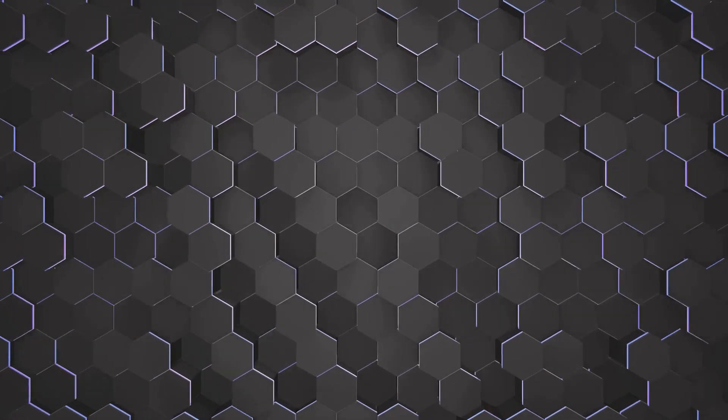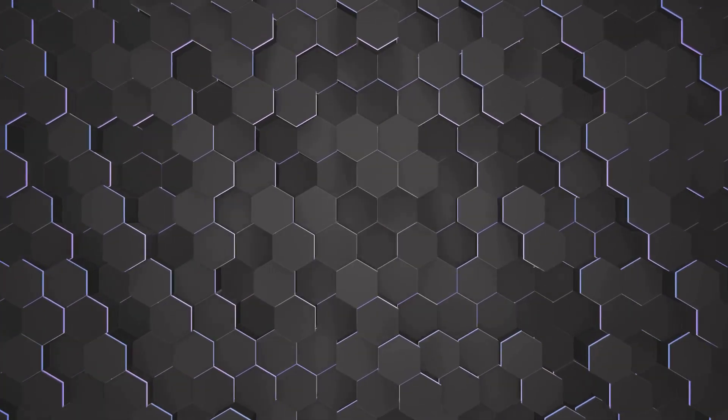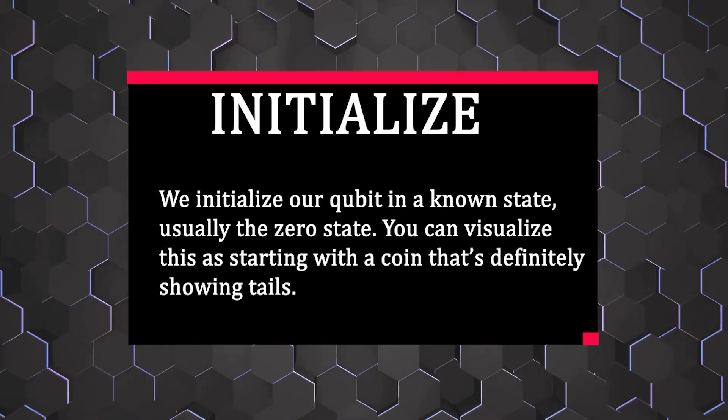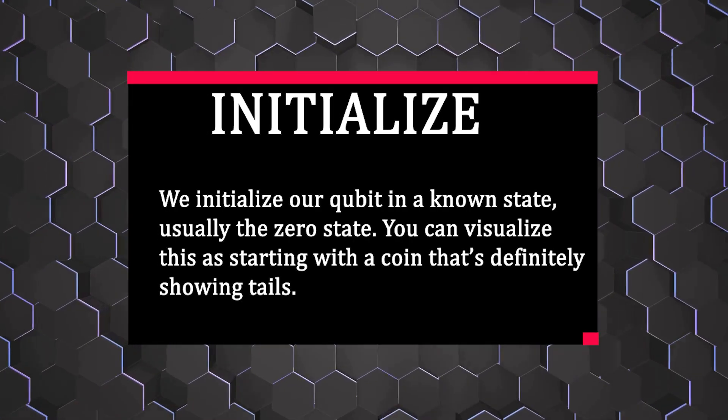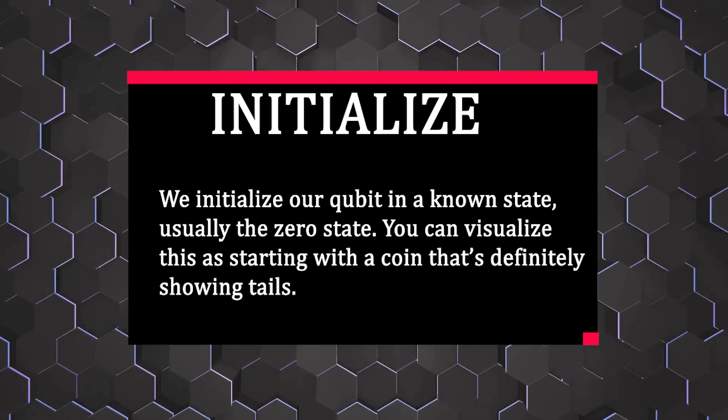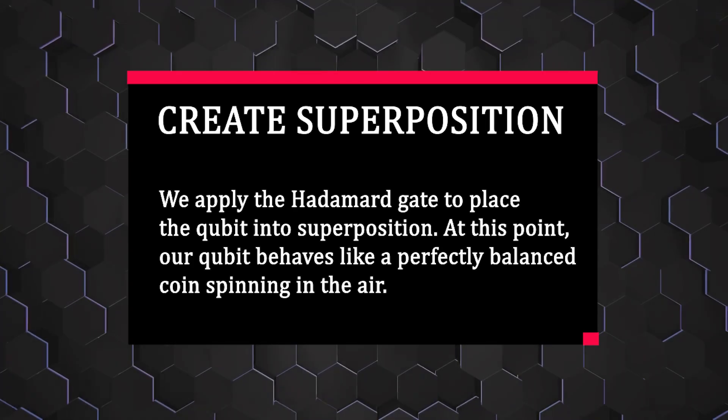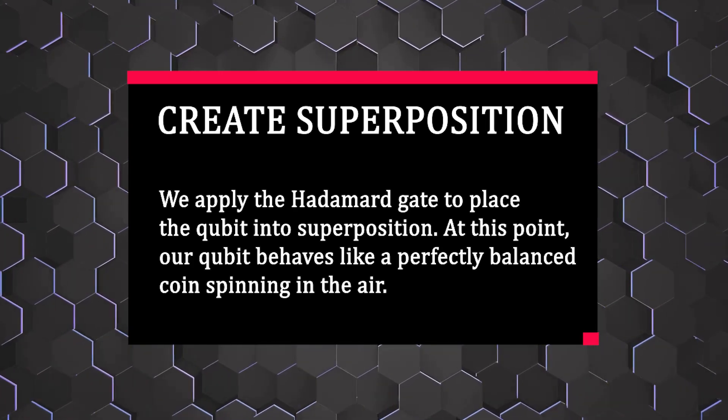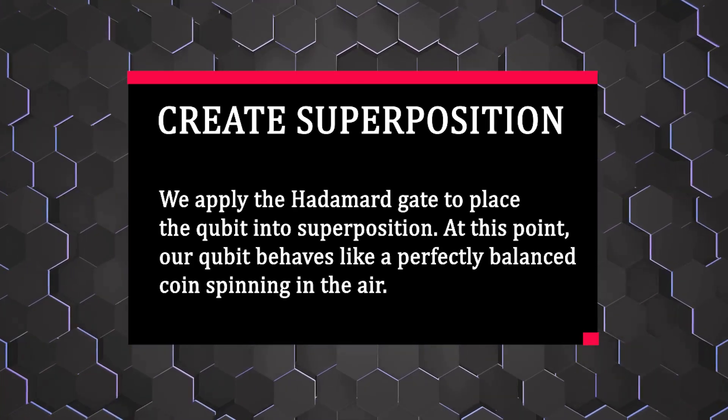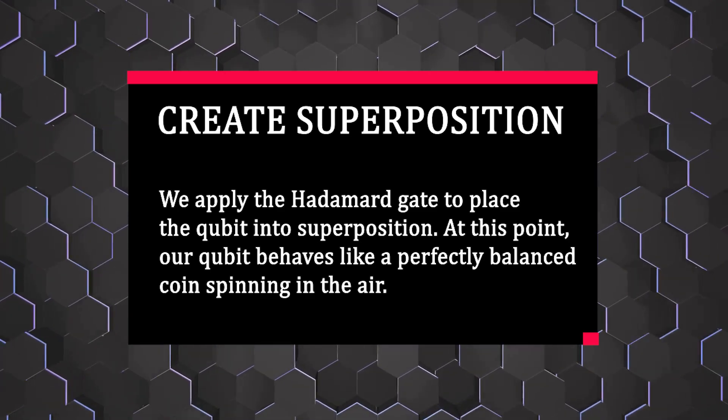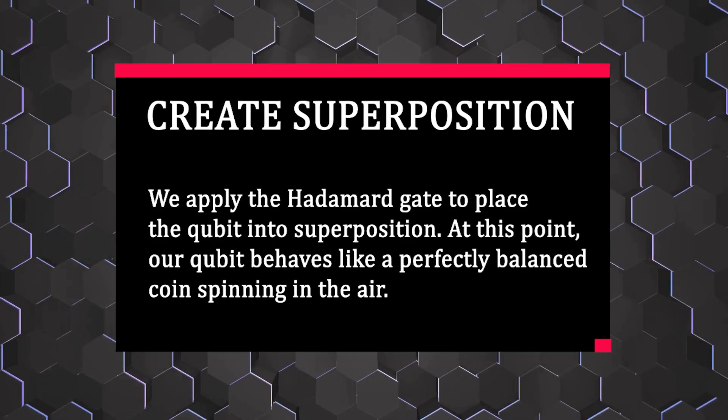Step 1: Initialize. First we initialize our qubit in a known state, usually the zero state. You can visualize this as starting with a coin that's definitely showing tails. Step 2: Create superposition. Next we apply the Hadamard gate to place the qubit into superposition. At this point, our qubit behaves like a perfectly balanced coin spinning in the air, equally likely to land heads or tails.